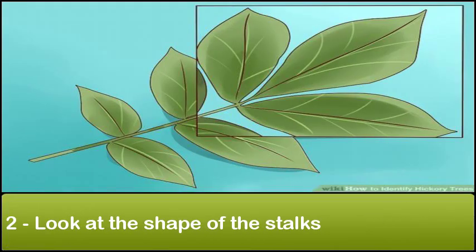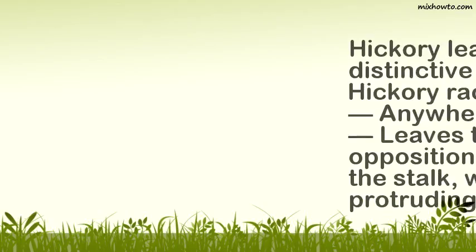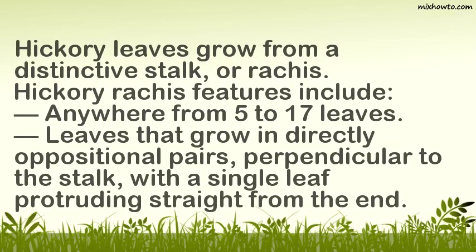Step 2: Look at the Shape of the Stalks. Hickory leaves grow from a distinctive stalk, or rachis. Hickory rachis features include anywhere from 5 to 17 leaves, leaves that grow in directly oppositional pairs perpendicular to the stalk, with a single leaf protruding straight from the end.